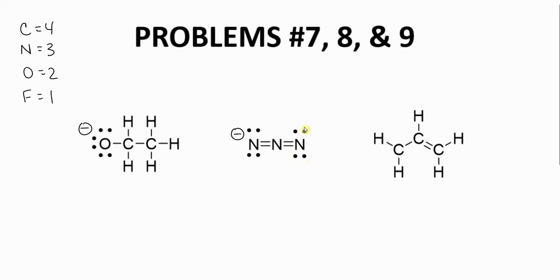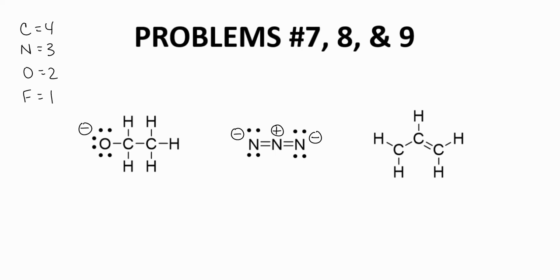The nitrogen on the far right has the same situation — a full octet but only 2 bonds — therefore its formal charge is also negative. This is a species with multiple atoms that have formal charges, which is not really common but does happen. The nitrogen in the middle has a full octet with 4 bonds — too many bonds — therefore this nitrogen has a positive charge. This species is called azide. It is a really common anion and is super useful in organic chemistry, which you will encounter with some frequency if you keep studying.